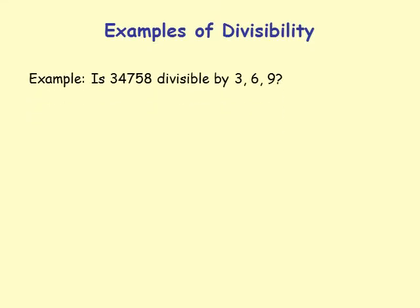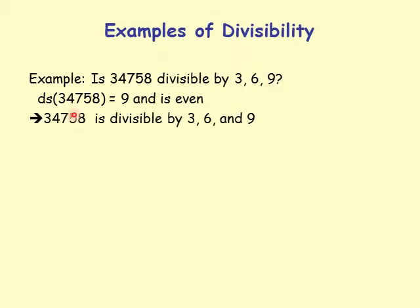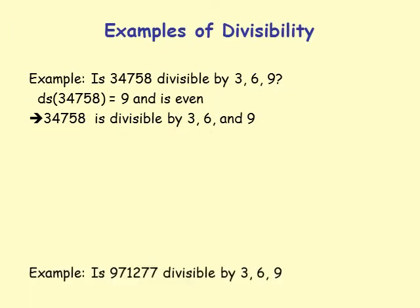Examples of divisibility: is 34758 divisible by 3, 6, and 9? Its digit sum is 3 plus 4 plus 7 plus 5 plus 8 equals 27, and digit sum of 27 is 9. The number is also even. So it is divisible by 3, 6, and 9.